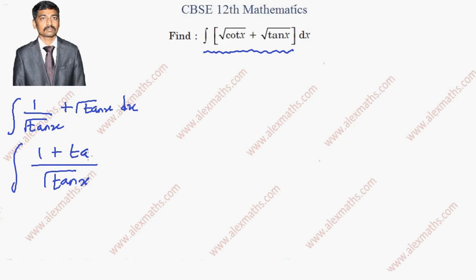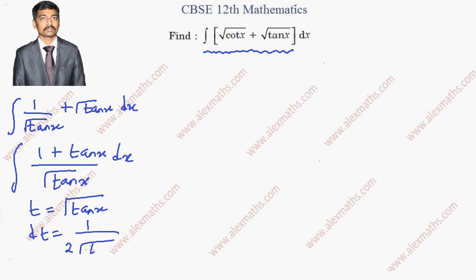In the numerator we get 1 + tan x, dx. We'll go for substitution: let t = √(tan x), and dt = (1/(2√(tan x))) · sec²x · dx, using the chain rule, since the differentiation of tan x is sec²x dx.